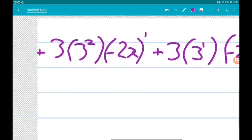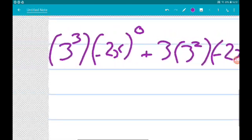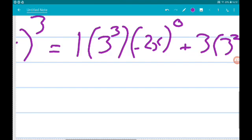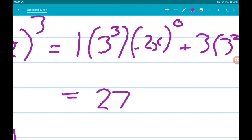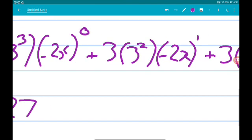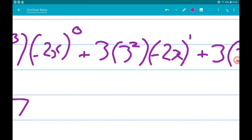So we've got, first up, we have 3 cubed which is 27. And then we got 3 times 3 squared, again which is 27, times minus 2x. So that's going to give us minus 54x.